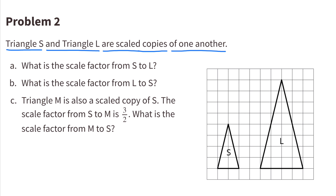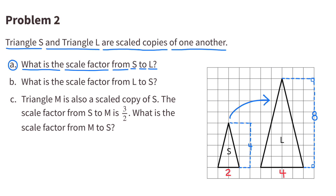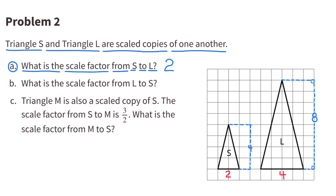Number 2. Triangle S and Triangle L are scaled copies of one another. A. What is the scale factor from S to L? Going from S to L, the base was originally 2 and became 4, so the base doubled, or multiplied by 2. And the height was originally 4 and became 8, so it also doubled. The scale factor from S to L is 2.